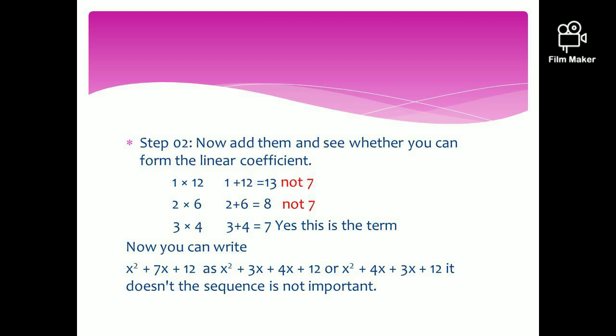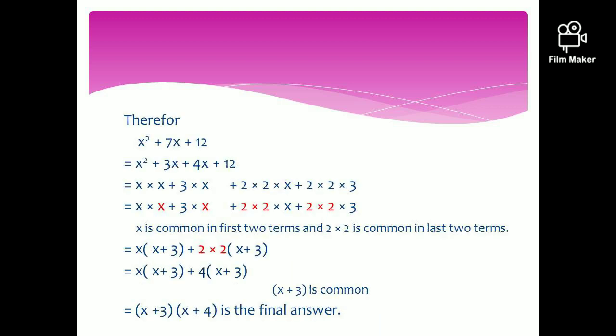When writing it, the sequence is not important as mentioned before. Therefore, you can write this quadratic expression as x squared plus 3x plus 4x plus 12, or x squared plus 4x plus 3x plus 12. You can change the position of 3x and 4x. Now let us work through this question from the beginning: x squared plus 7x plus 12, written as x squared plus 3x plus 4x plus 12.